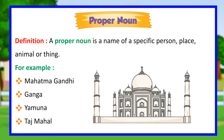Proper noun. Definition: a proper noun is a name of a specific person, place, animal or thing. For example: Mahatma Gandhi, Ganga, Yamuna, Taj Mahal.